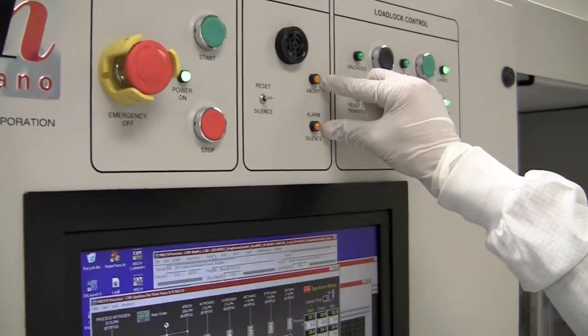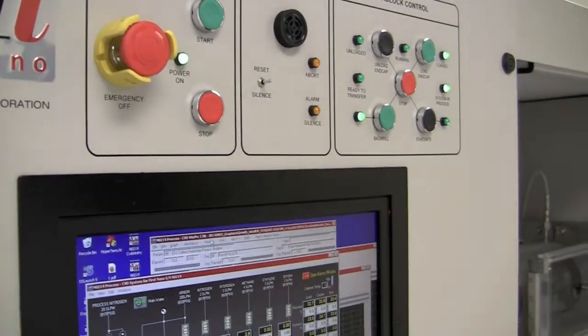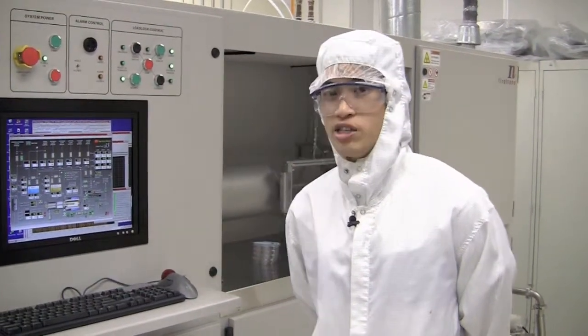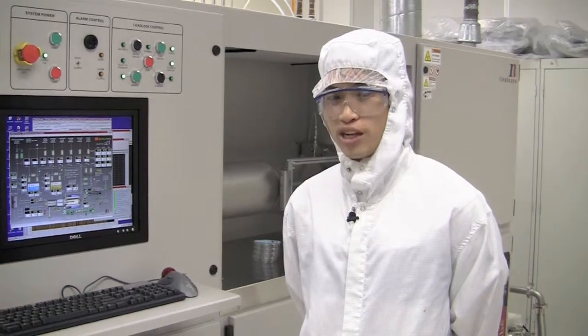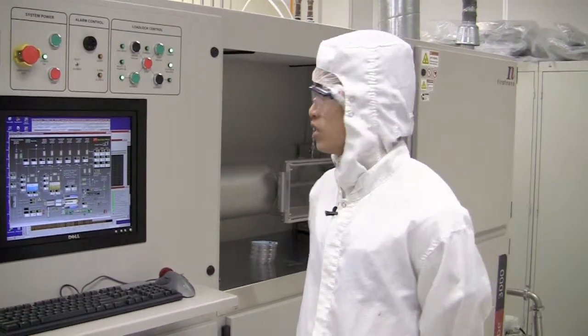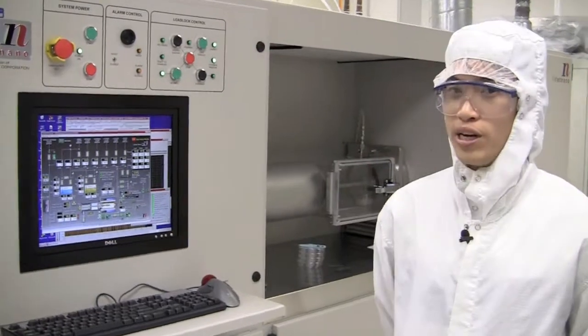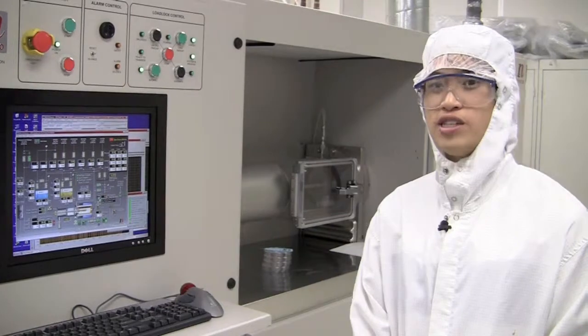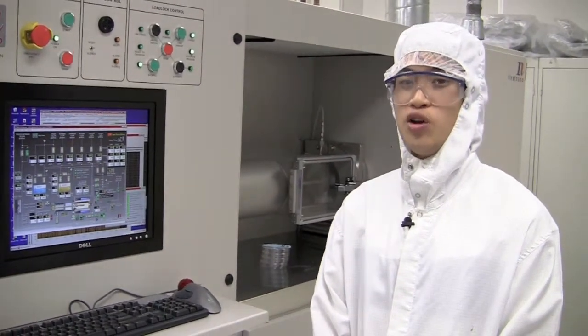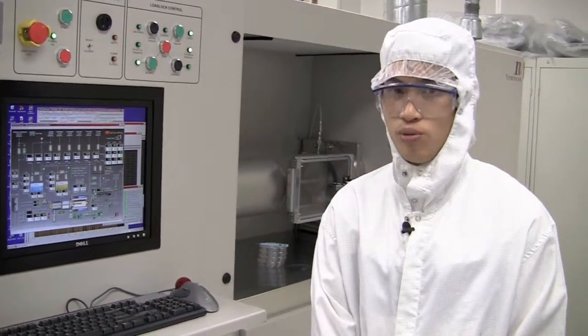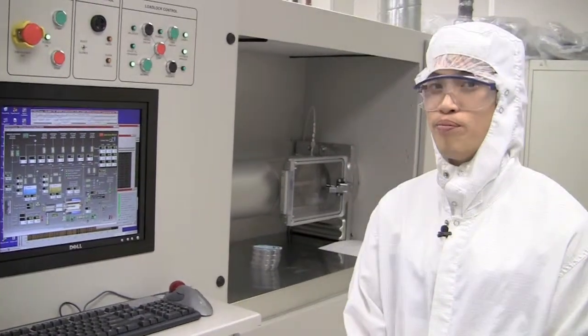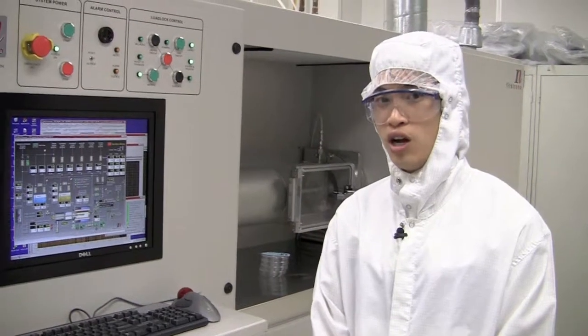After you hit reset to begin the recipe, every recipe has a leak back check stage. This series of pumping down ensures there's no leaks in our system. This is a safety mechanism to ensure no oxygen gets inside our tube and no combustible gases leave the tube. After the pump down stage is over, the recipe will begin and the furnace will begin heating up.